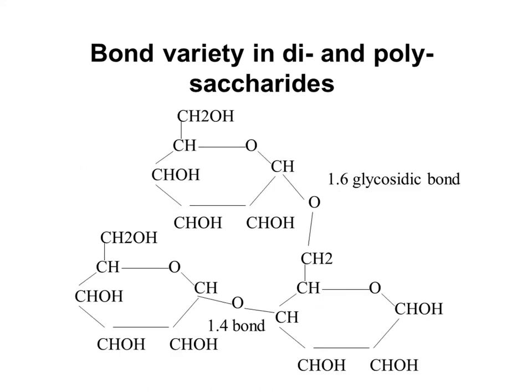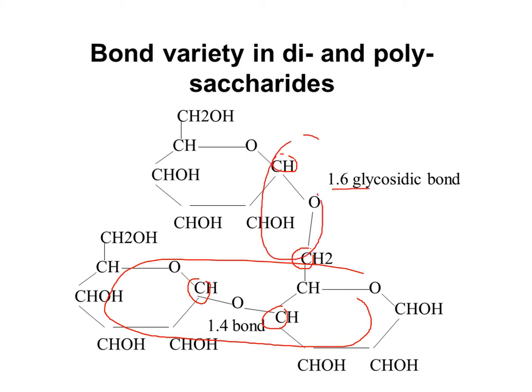In this diagram, one sugar forms a glycosidic bond between carbon number one and carbon number six of another sugar molecule — this is the 1,6-glycosidic bond. At the bottom, you have the 1,4-glycosidic bond, which is between carbon number one of one sugar and carbon number four of another. The 1,4-glycosidic bond is predominantly found in the backbone of carbohydrate polymers, while the 1,6-bond is found in the side chains.